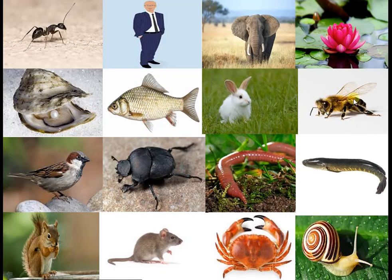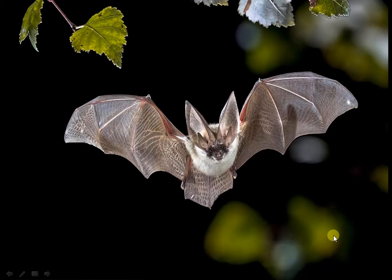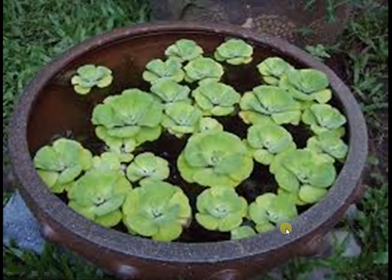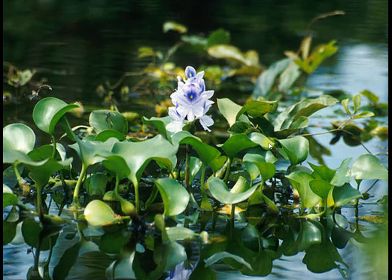Here is a list of some organisms and human beings: Elephant, Lotus, Oyster, Fish, Rabbit, Bee, Sparrow, Dung Beetle, Earthworm, Squirrel, Rat, Crab, Snail, Bat, Water Hyacinth, Monkey.